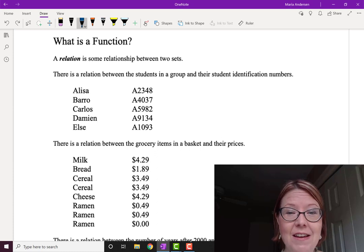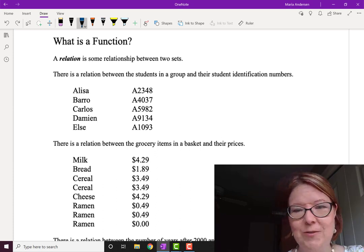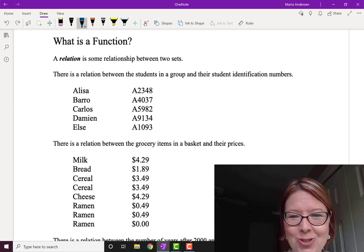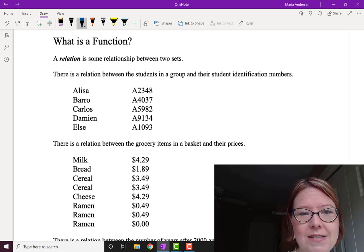So for example, if we have a group of students, we can ask each student what is their identification number. Their student ID would probably be better than something like their social security number. So if we ask Elisa what her student ID is, she might tell us it's A2348.